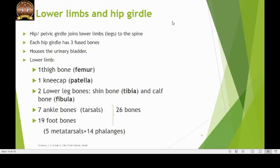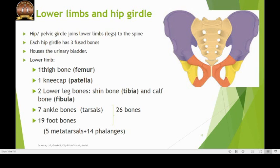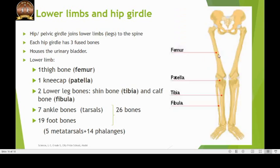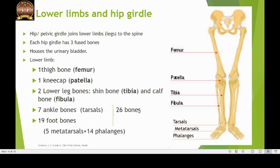The lower limbs and hip girdle or pelvic girdle are the other parts of the appendicular skeleton. The pelvic girdle joins the lower limbs or legs to the spine. Each girdle is made up of 3 bones which are fused together. The upper leg or thigh is supported by the longest bone in the human body, which is the femur. The lower legs are made up of 2 bones: the tibia or the shin bone and the fibula or the calf bone. The joint where the femur meets the tibia is called the knee and it is protected by a round-shaped bone. Each foot is made up of 7 ankle bones or tarsals, 5 metatarsal bones which connect between the ankles and the toes, and 14 toe bones or phalanges, making a total of 26 bones in a foot alone.